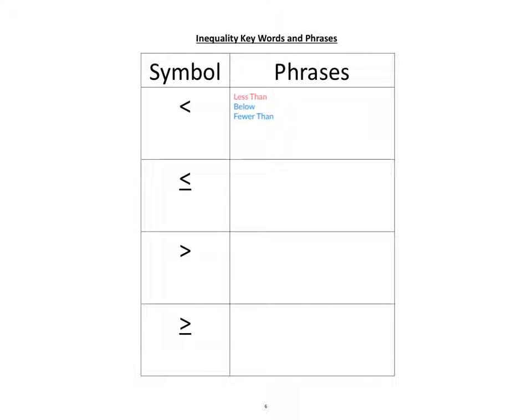Notice that this symbol underneath it looks exactly the same as the first one except it's got a line under it. So while these symbols are similar, they do have a different meaning. The second symbol is called less than or equal to. Now some other synonym phrases for this are at most, maximum, and not more than.